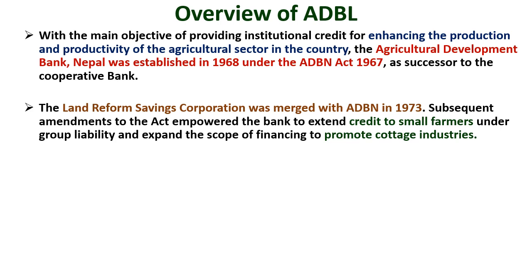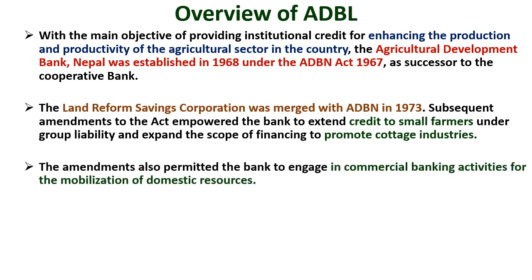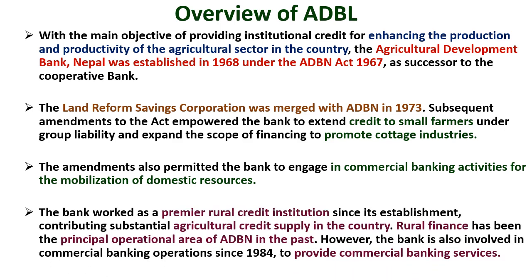Subsequent amendments to the Act empowered the bank to extend credit to small farmers under group liability and expand the scope of financing to promote cottage industries. The amendments also permitted the bank to engage in commercial banking activities for the mobilization of domestic resources. The bank worked as a premier rural credit institution since its establishment, contributing substantial agricultural credit supply in the country.